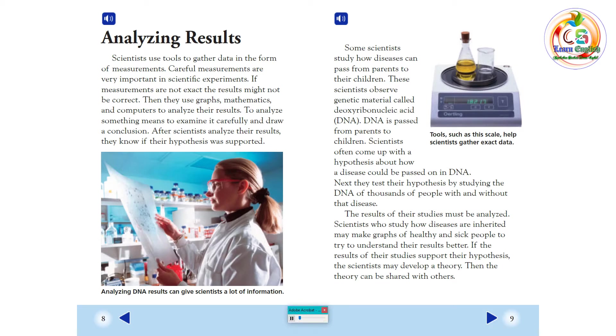Some scientists study how diseases can pass from parents to their children. These scientists observe genetic material called deoxyribonucleic acid, or DNA. DNA is passed from parents to children. Scientists often come up with a hypothesis about how a disease could be passed on in DNA. Next, they test their hypothesis by studying the DNA of thousands of people with and without that disease. The results of their studies must be analyzed. Scientists who study how diseases are inherited may make graphs of healthy and sick people to try to understand their results better. If the results of their studies support their hypothesis, the scientists may develop a theory. Then, the theory can be shared with others.